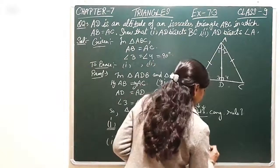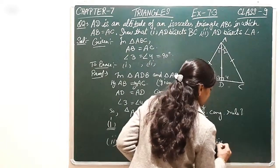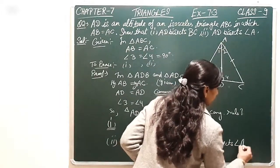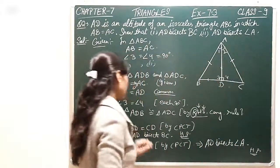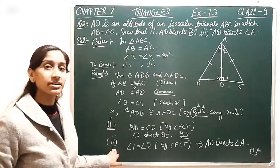And secondly we see that we need to prove angle A bisects, that means angle 1 is equal to angle 2. So we can also write by CPCT, these are corresponding parts of both triangles and we can say them equal, angle 1 is equal to angle 2, it implies AD bisects angle A.